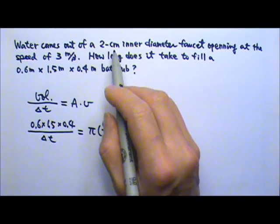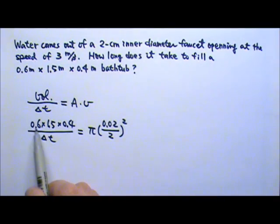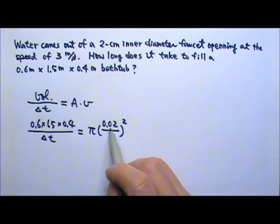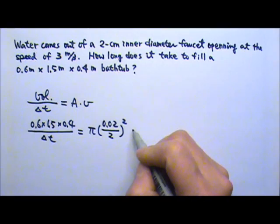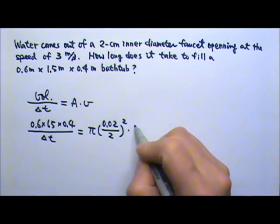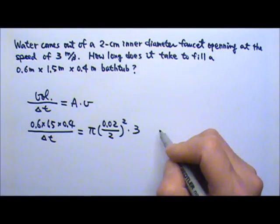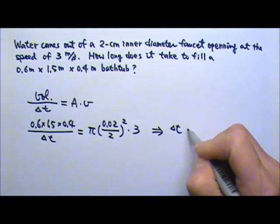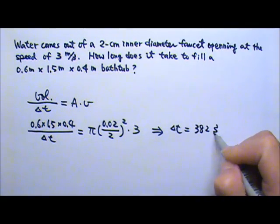That's why I have to be consistent and make this meters as well. Times the speed, the flow speed is 3 m per second. So that's what we have and then we can just solve for the time and I'll get time equals to 382 seconds.